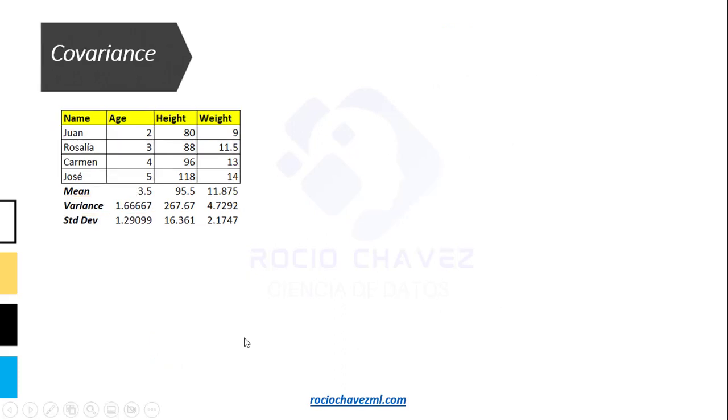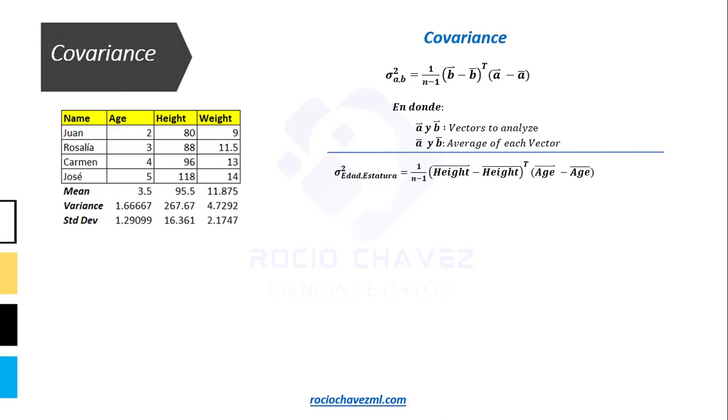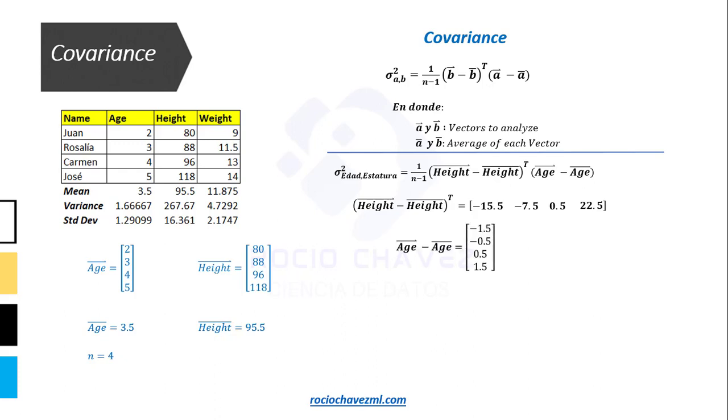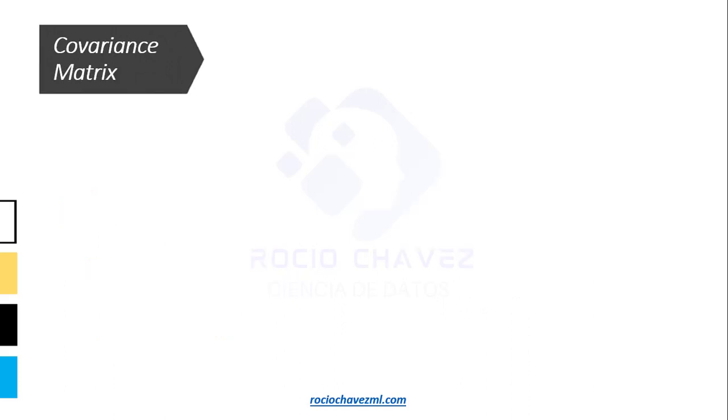Next, we have the covariance between two variables, whose formula is very similar to that of the variance. We have the vectors of the two variables being analyzed and the subtraction of these with their corresponding average values. Let's obtain the covariance between age and height. The vector a will be age, and the vector b will be height. These are their vectors and average values. We obtain the transpose of the values resulting from subtracting the height vector minus its average. We subtract the age average from the age vector. If we substitute these values into the formula, we see that the covariance between age and height is 20.33.